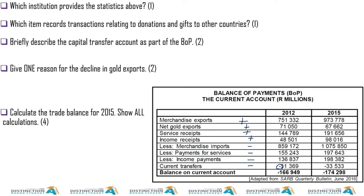Why do we add merchandise exports? Because exports are all the goods we send out — money comes in. So we're talking about the flow of money. Net gold exports: gold is going out, but money is coming in, so we add. Service receipts: we render services to foreigners and they pay us, so we receive money.